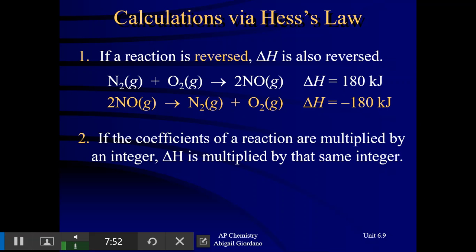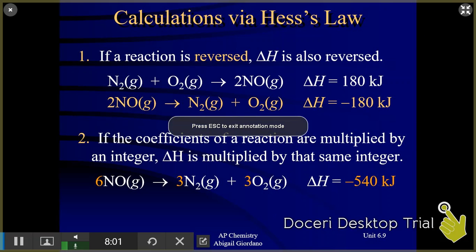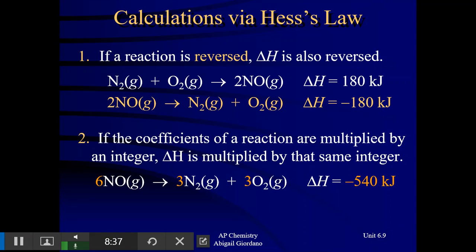You might also have to multiply an equation by some number to make the coefficients correct. From here to here, I multiplied this equation by three — all the coefficients have been multiplied by three. And what happened to the delta H value? Remember, heat is an extensive property. If you change the coefficients, you change the delta H value, so I multiply my heat by that number as well.